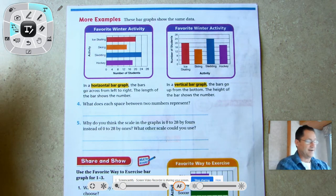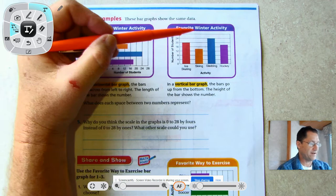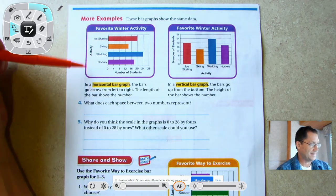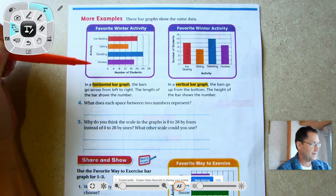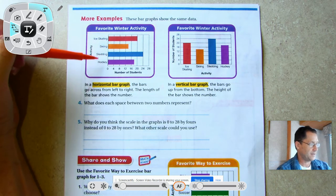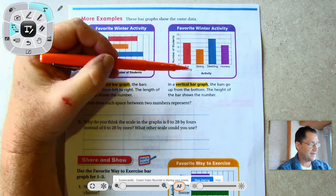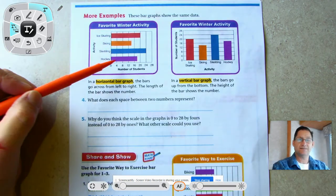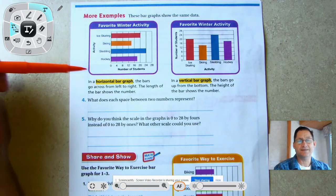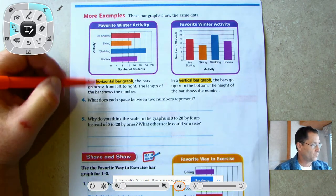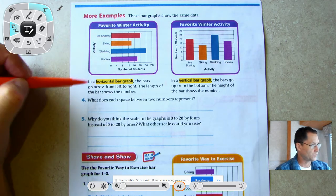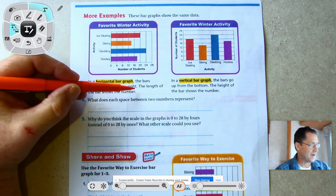Now let's go to page 78. These bar graphs show the same data: favorite winter activity, number of students, activity - ice skating, skiing, sledding, hockey. It's the same information, just oriented differently. We call this graph on the left a horizontal bar graph where the bars go across left to right.